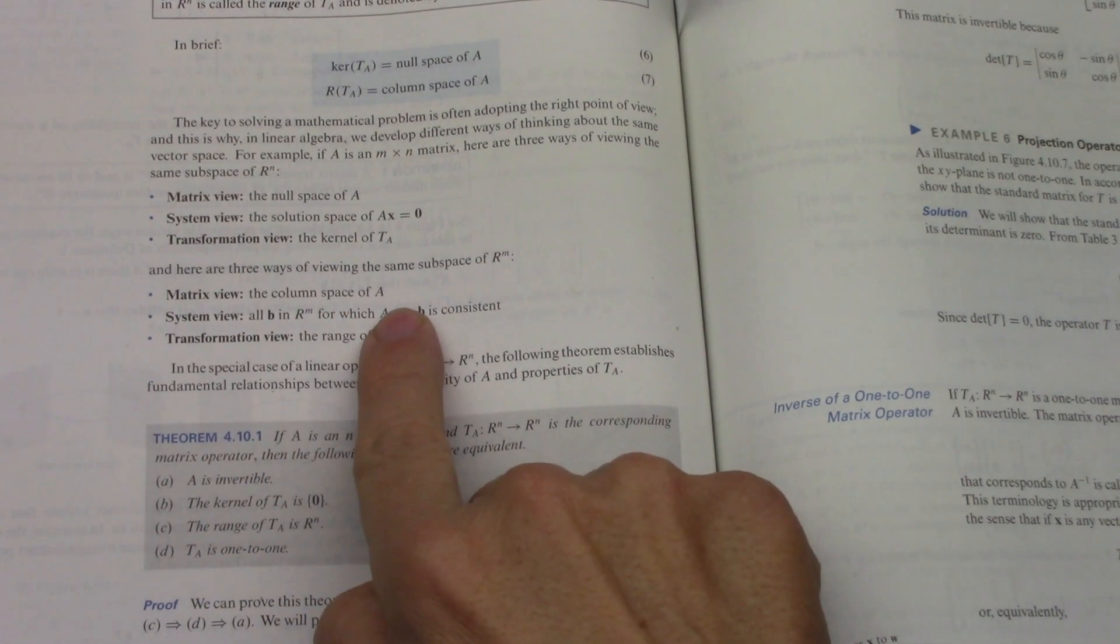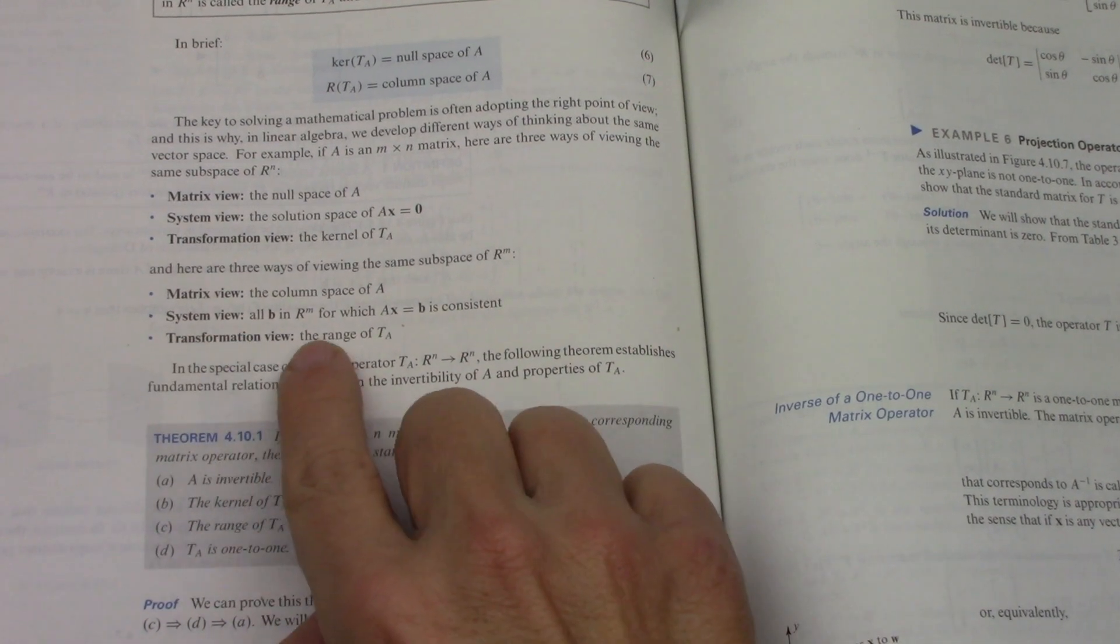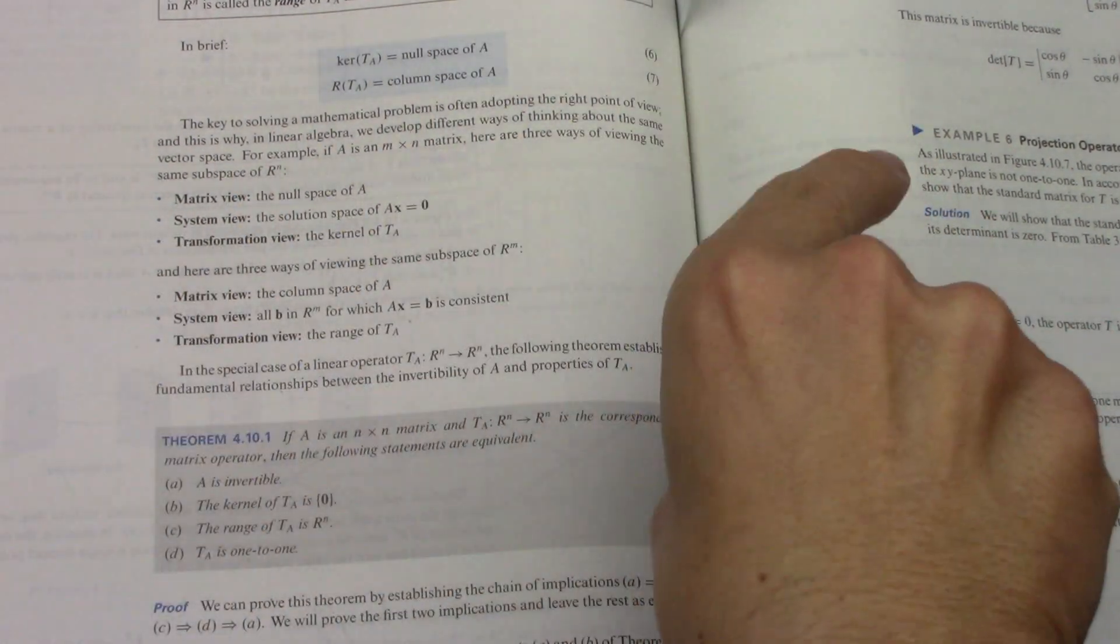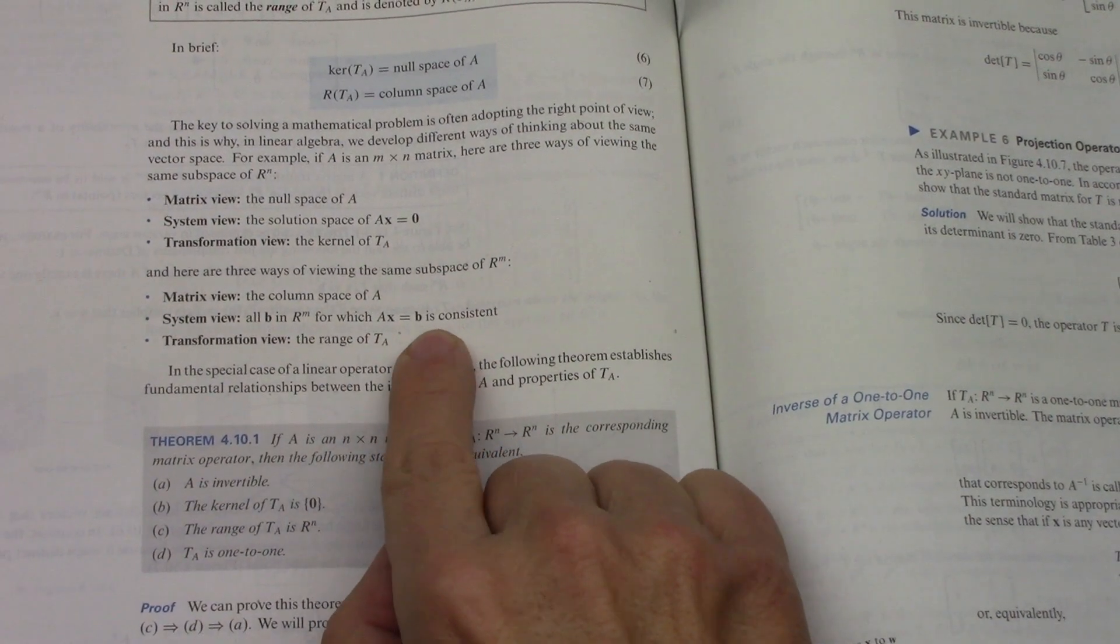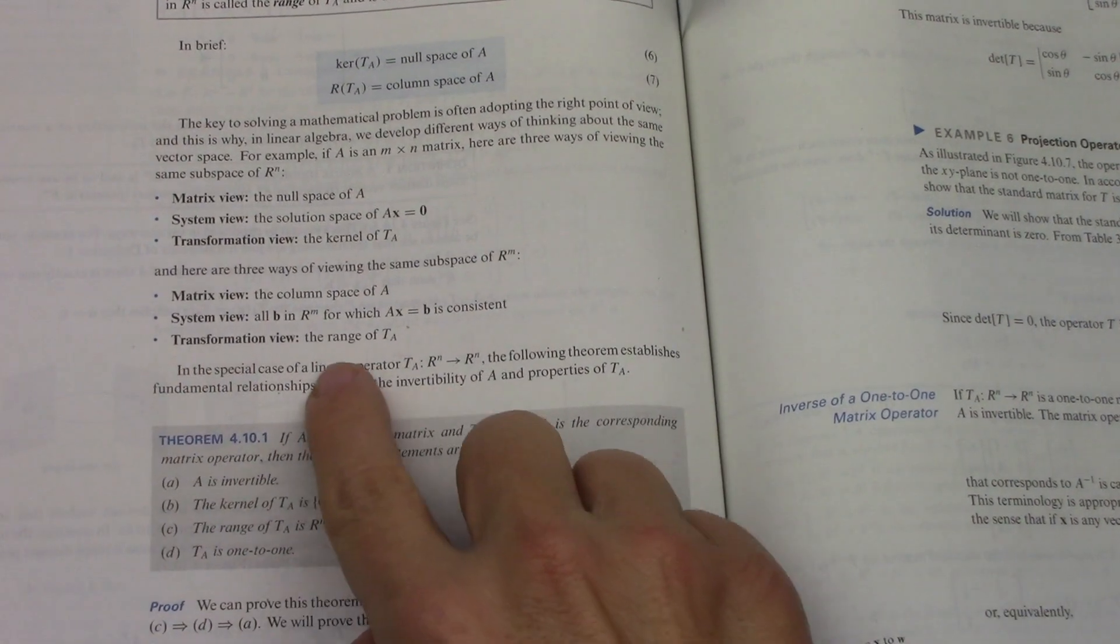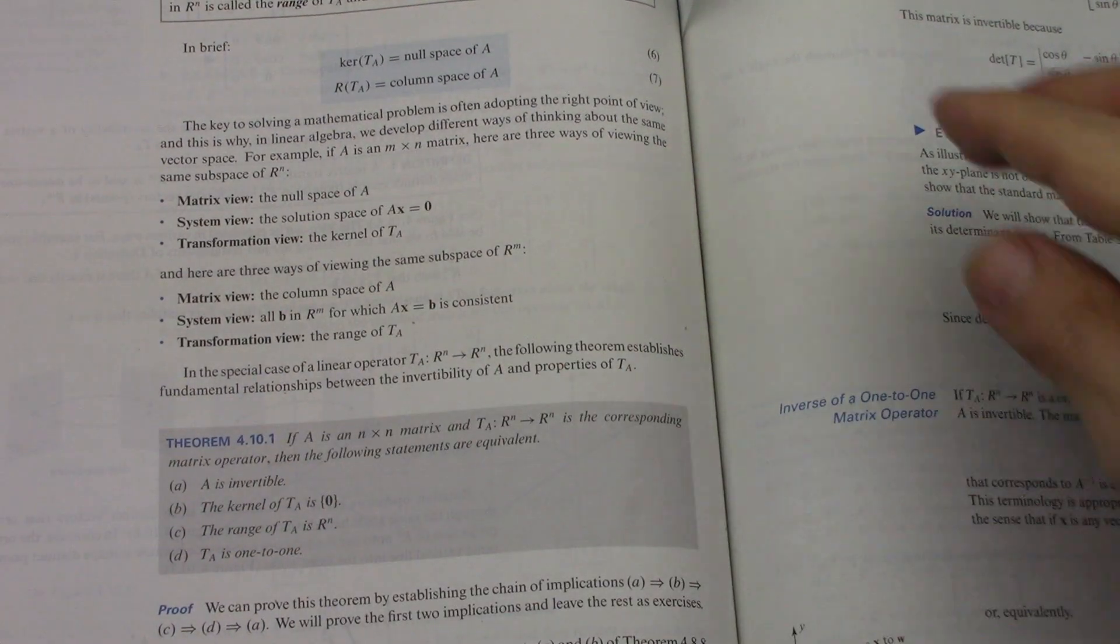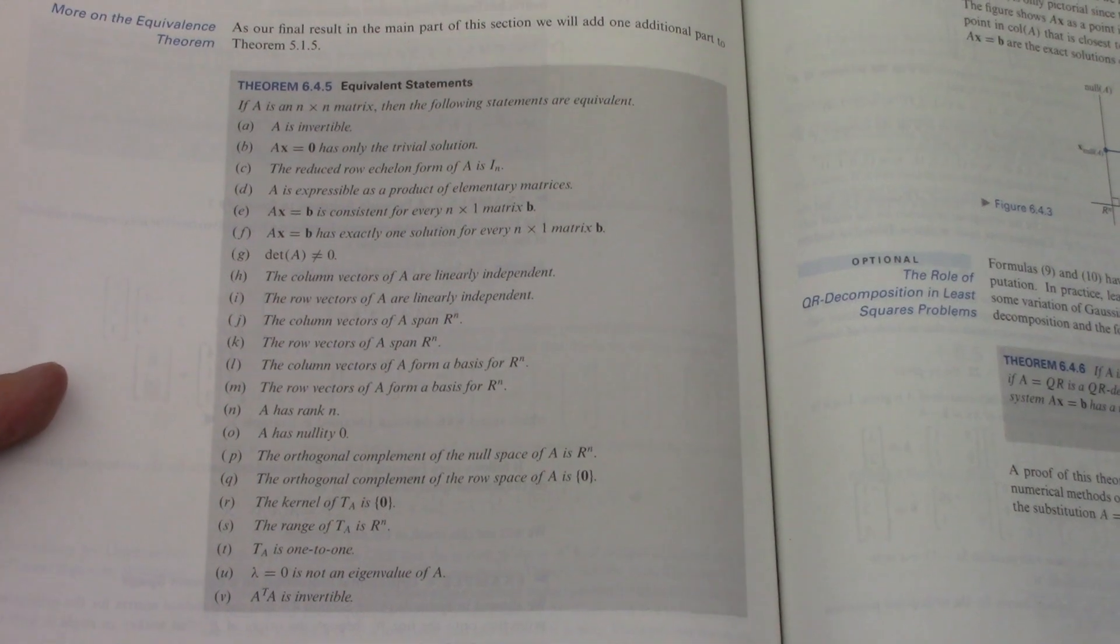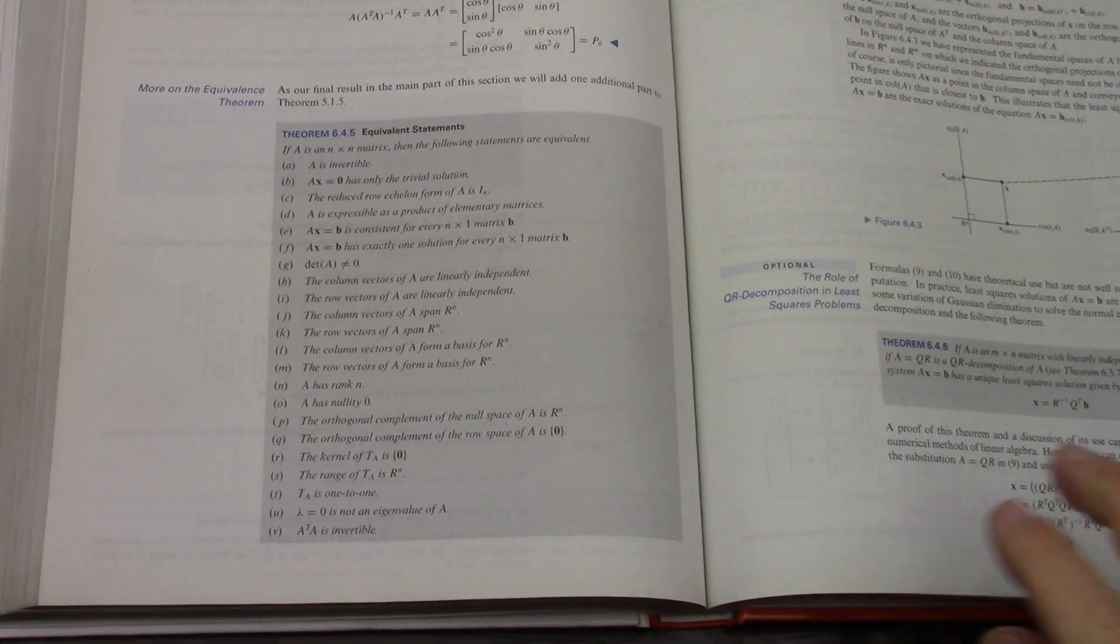For the column space of A, the matrix view, that's what it's called, but in the system view, it's the whole B vector in the destination, the range vector space, for which AX equals the B vector, and it has to have a consistent solution. Then the transformation view is the range of T of A. One thing that happens in Anton, I will remember to zoom out a little for this one.